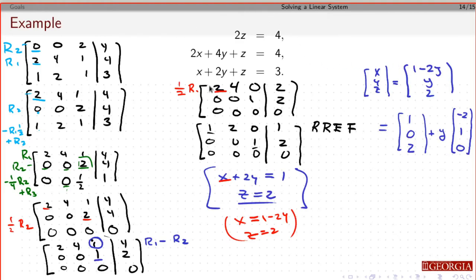So any solution to this thing right here is going to be in this form right here. It's going to be x is 1, 0, 2 plus any number times minus 2, 1, 0.